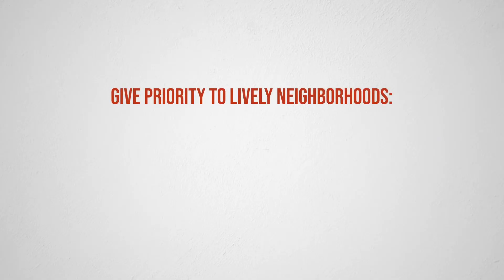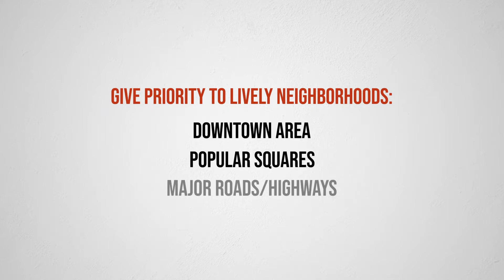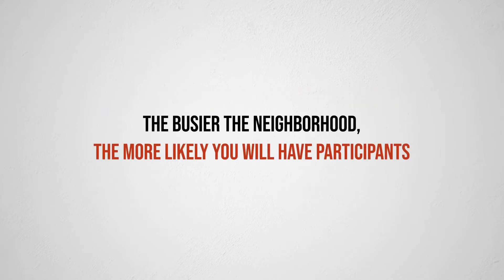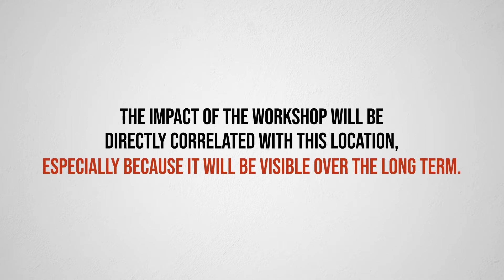Several elements are to be taken into account in priority. First of all it will be necessary to give priority to lively neighborhoods such as downtown, popular squares or major roads and highways. The busier the neighborhood the more likely you will have participants. Select a location based on its visibility. The impact of the workshop will be directly correlated with this location, especially since it will be visible over the long term.